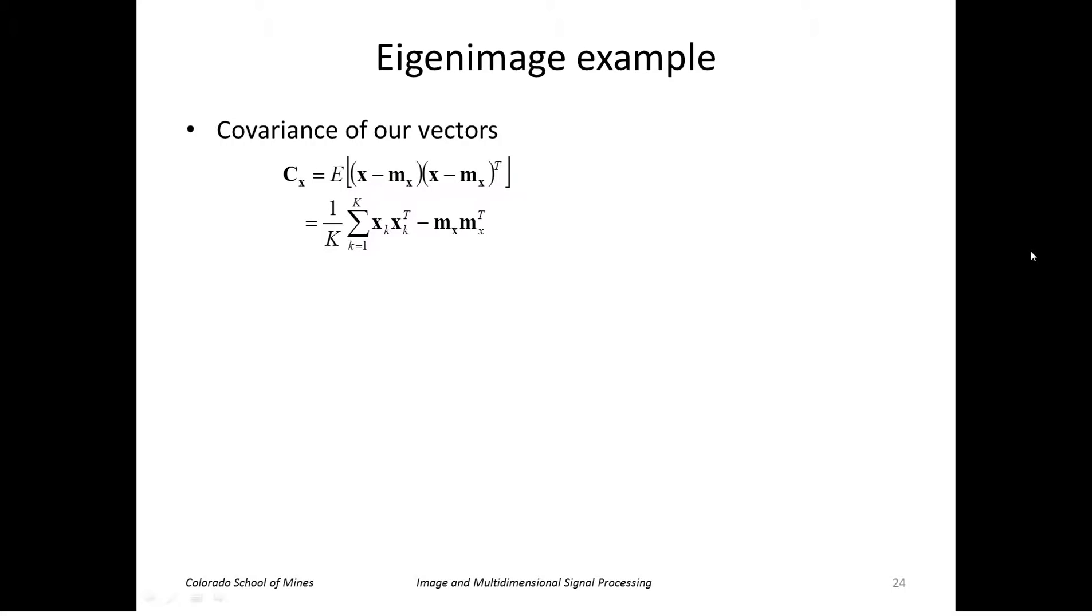So again we can compute the covariance of our vectors, each vector representing an image, using this equation. Since we've subtracted off the mean from the input vectors, the mean is equal to 0, so this drops out. We just get the covariance of x is equal to the sum of x x transpose, which is just our vector matrix B times B transpose divided by the total number k.